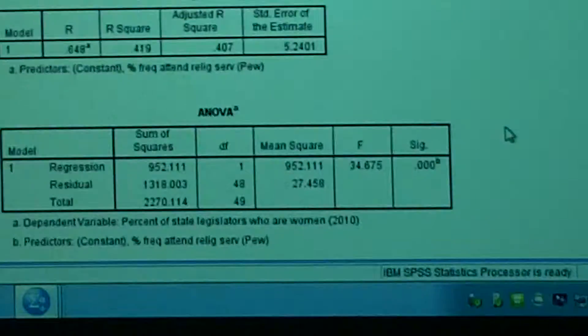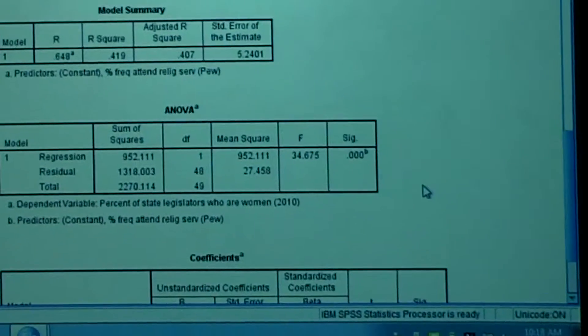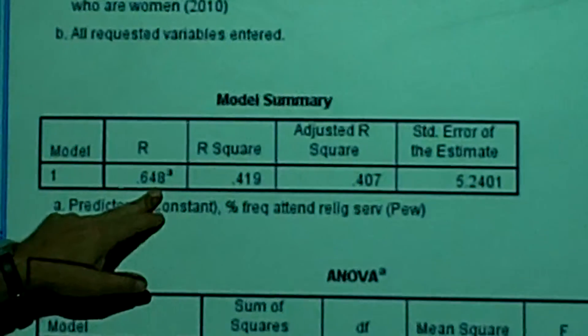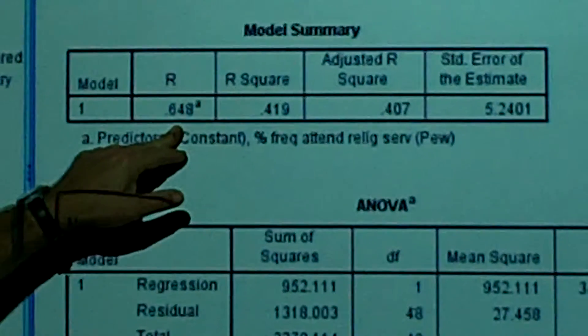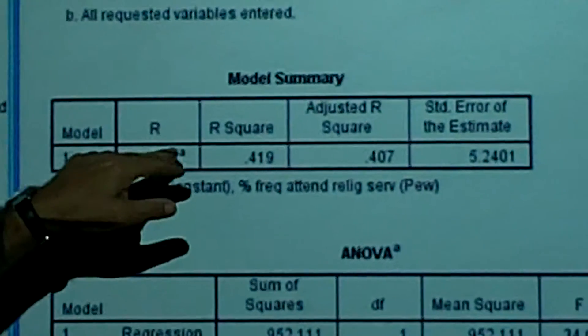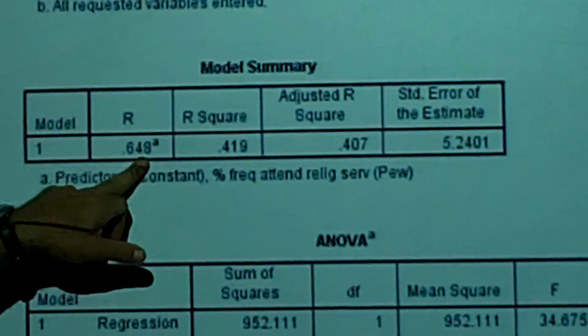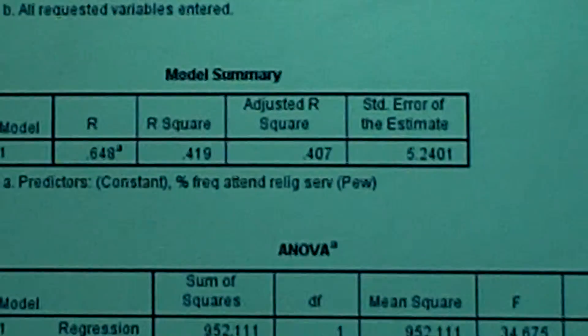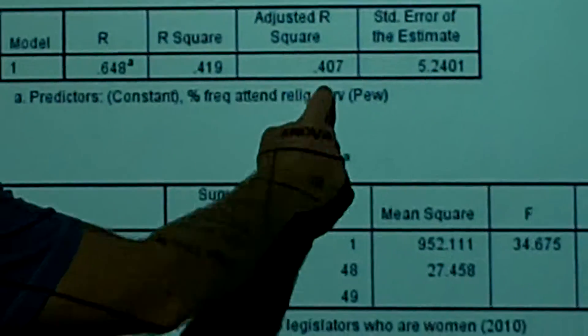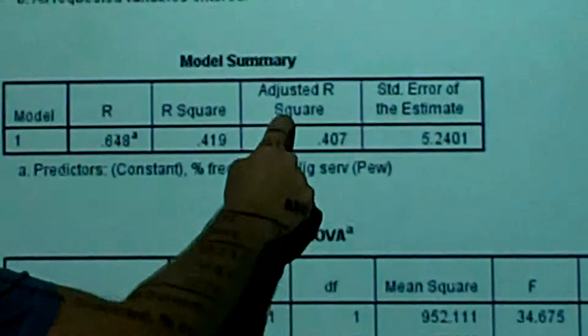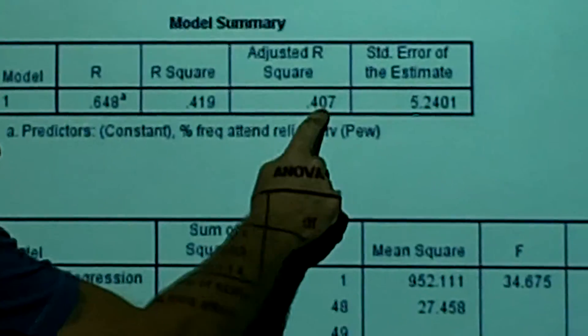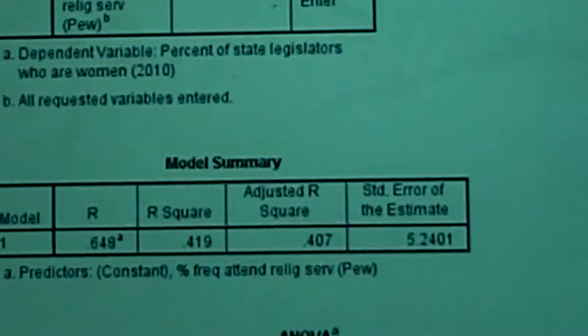And we get this. And you might recognize that r. Can you focus in on this one right here? 0.648. If we squared 0.648, we'll get 0.419. And then we don't have time to talk about it, but you always want to use the adjusted r squared. And it's 0.407.